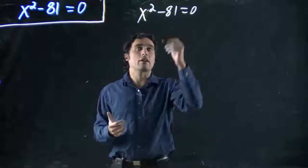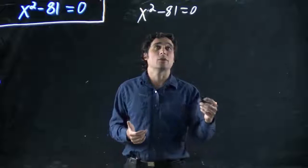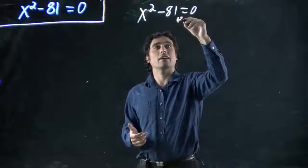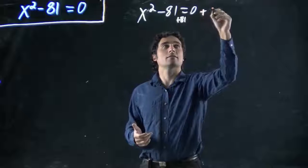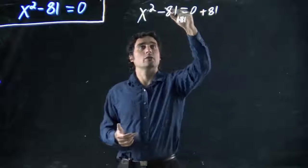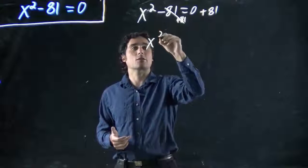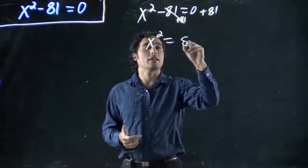If I'm going to get rid of a minus 81, what do I have to do? I'm going to have to add 81 to both sides. These will cancel, so I'm left with x squared equaling 81.